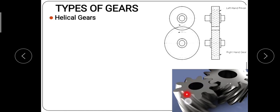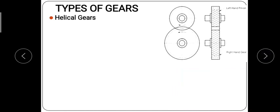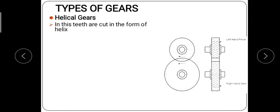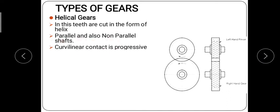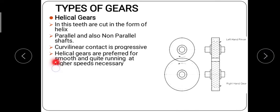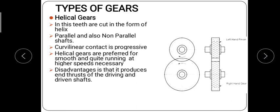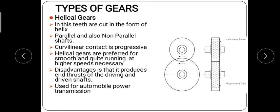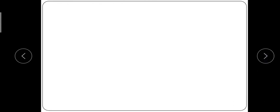In helical gears, the teeth are cut in the form of a helix and can be used for parallel and non-parallel shafts. The curvilinear contact is progressive, so there is no delay in tooth contact and they work smoothly and quietly at higher speeds. The disadvantage is that they provide an end thrust, pushing force on the driven gear. These are generally used in automobile power transmission. More gear types will be covered in the next class.